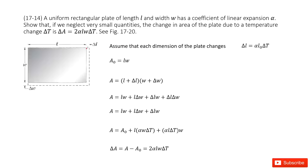We can see the change of area, delta A, is just this highlighted part, and how it relates to the change of temperature, delta T. We'll prove it here. For the rectangular plane, each side length changes according to the linear thermal expansion formula — you can check your textbook. Initially, we know that A0 equals L times W.